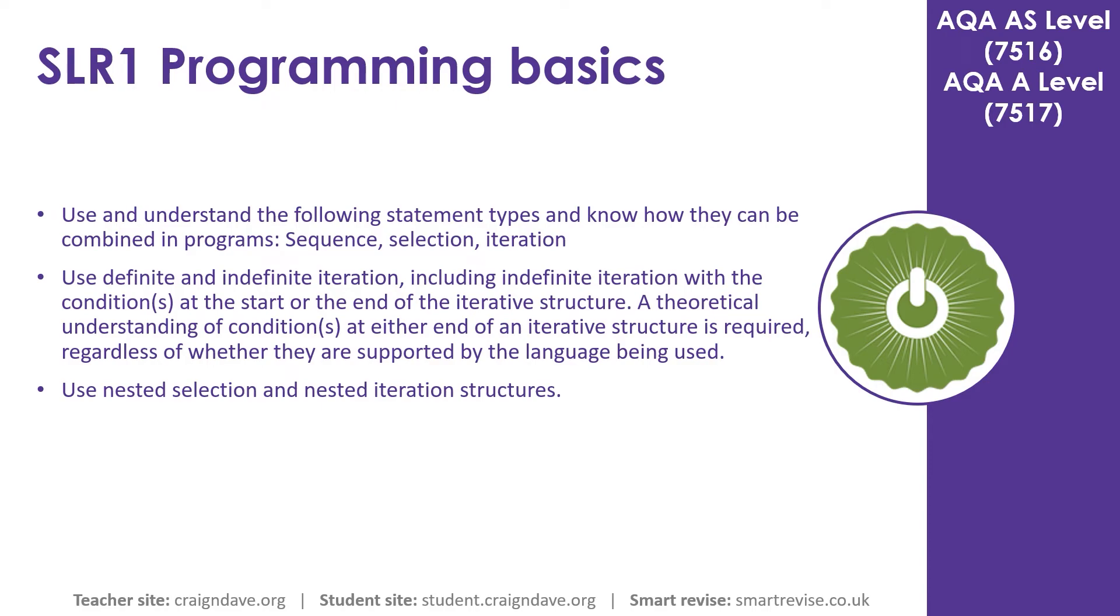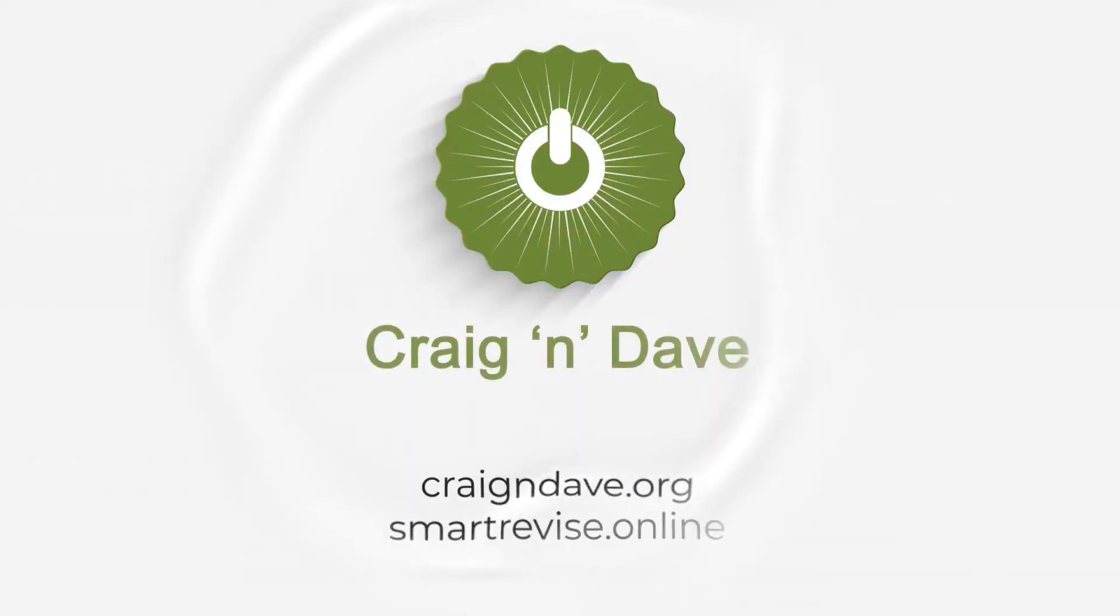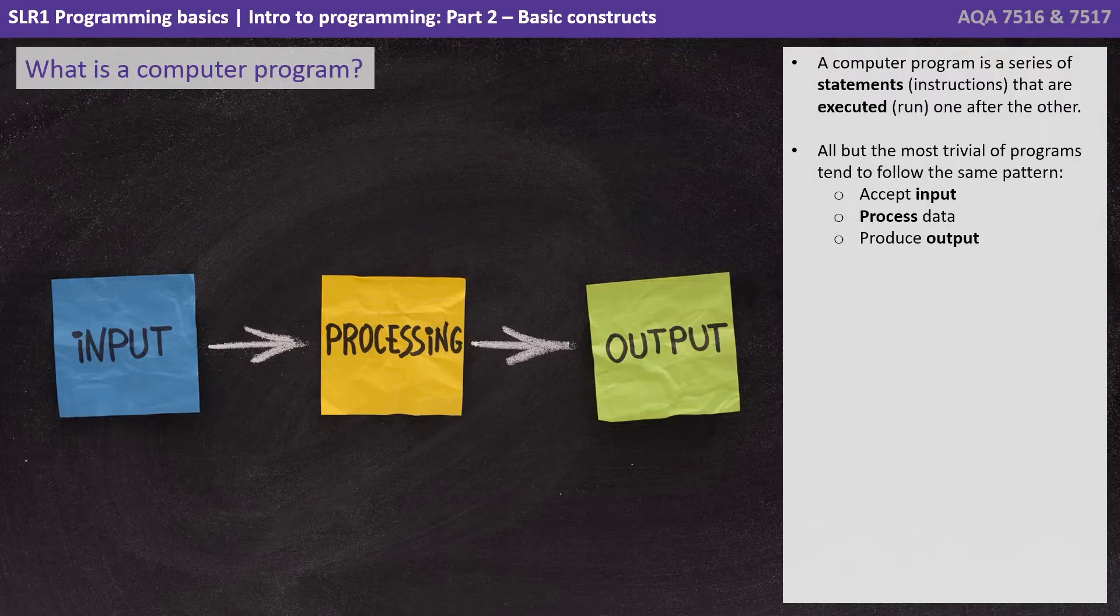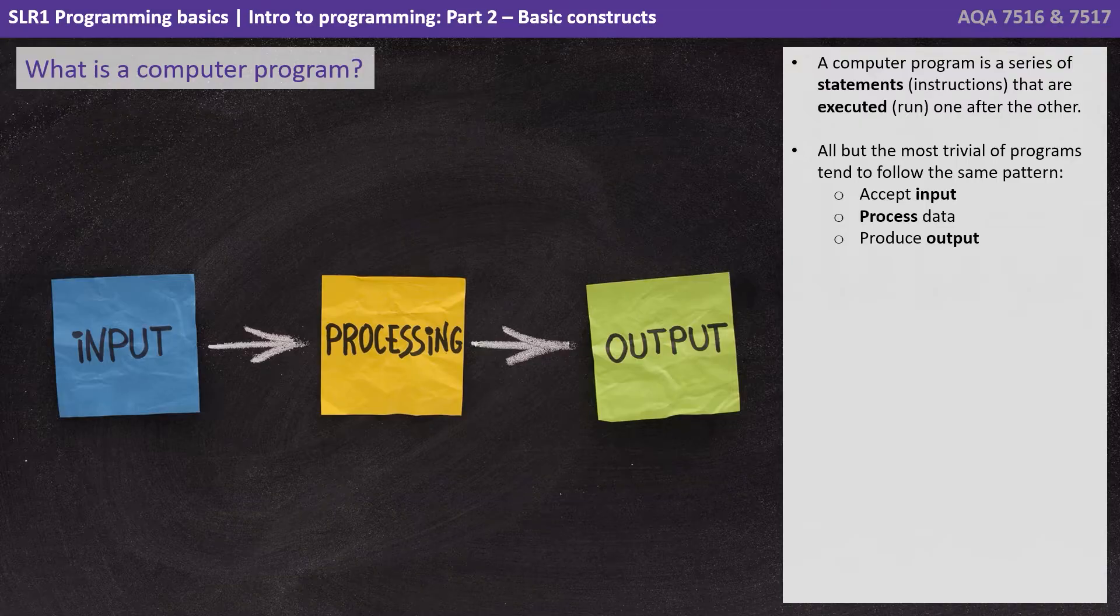In this video on programming basics, we introduce the fundamental programming constructs. A computer program is a series of statements or instructions that are executed, or run, one after the other. All but the most trivial of programs tend to follow the same pattern: accept input, process data, and produce output.